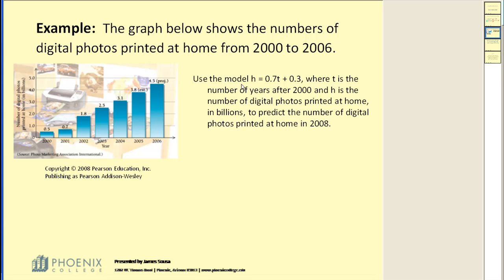Here's the problem: use the model H equals 0.7T plus 0.3, where T is the number of years after 2000 and H is the number of digital photos printed at home in billions. Predict the number of digital photos printed at home in the year 2008.